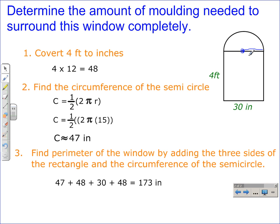Since this whole side is 30, that would be the diameter. We take that diameter and we divide it in half to get 15. So the radius of the semi-circle is 15.